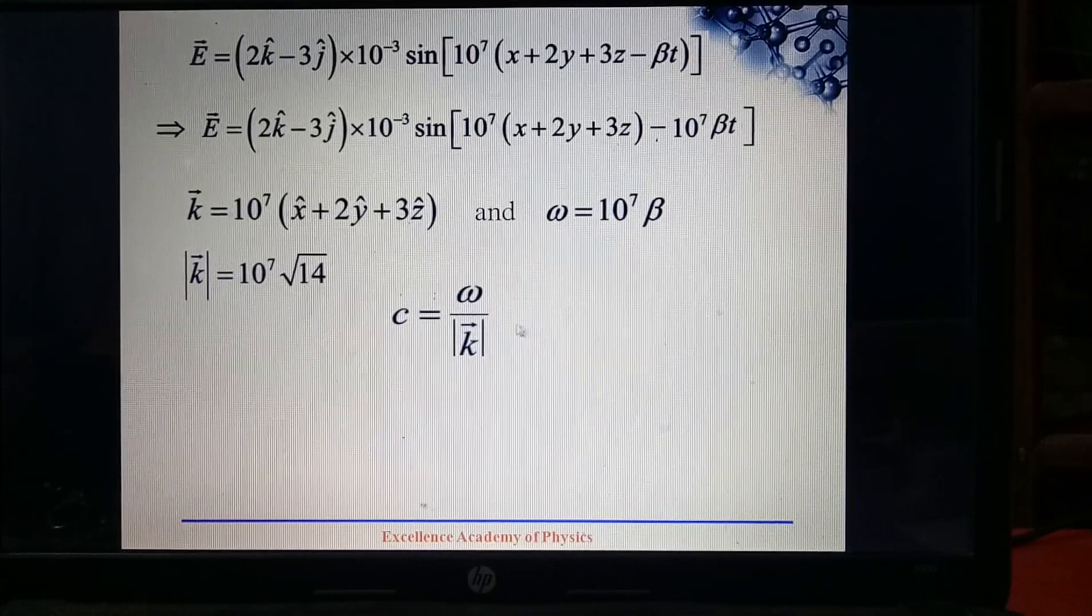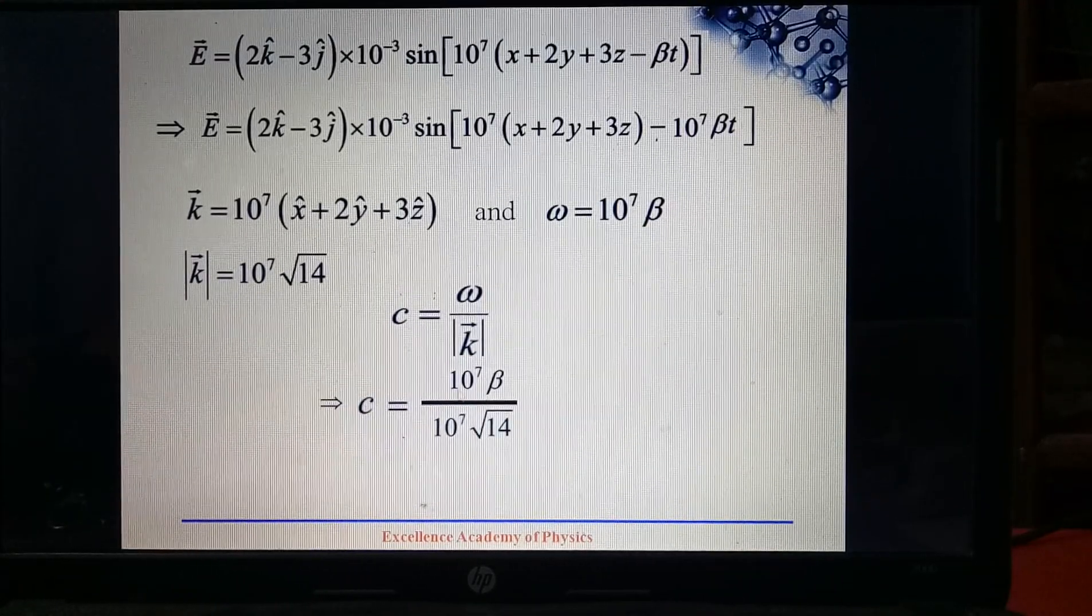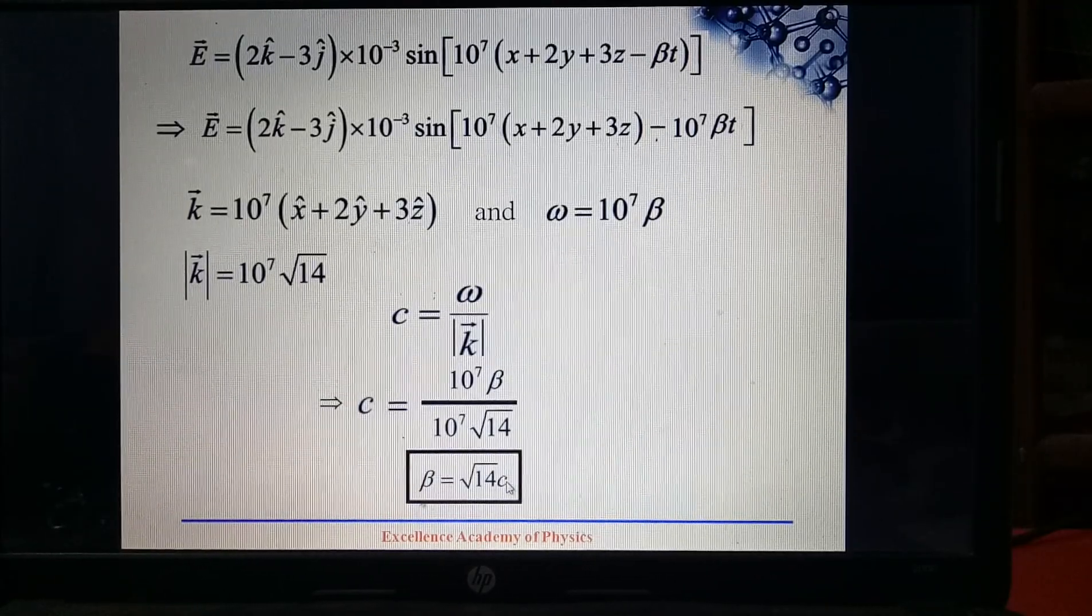Now put the values of k and omega. If we calculate this, then we get beta equals to root 14 c.